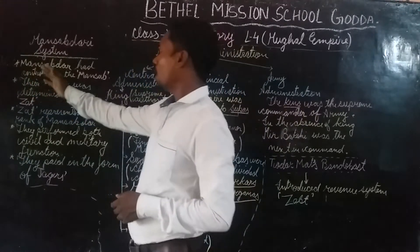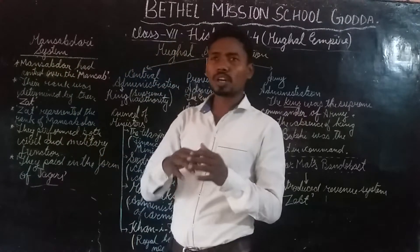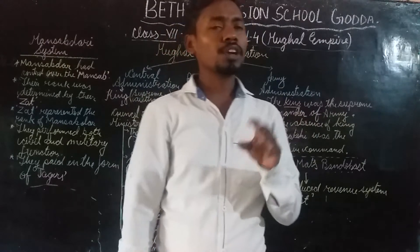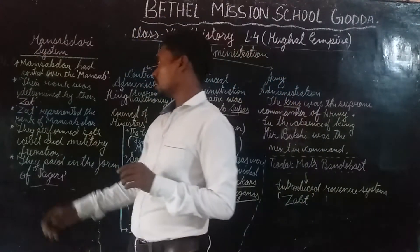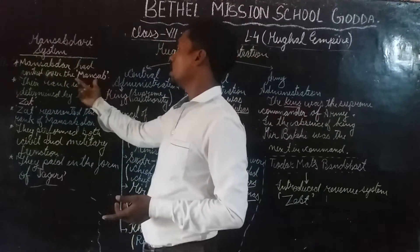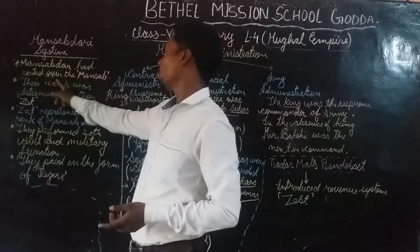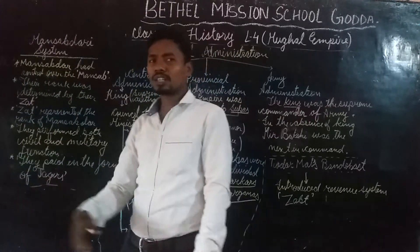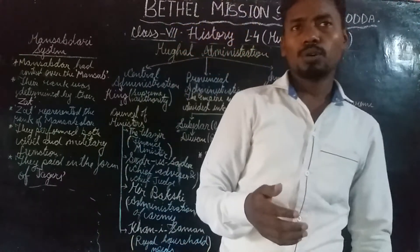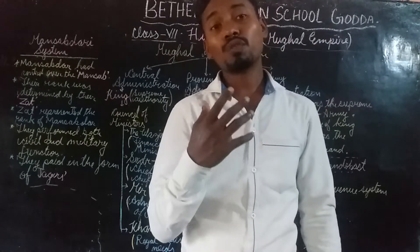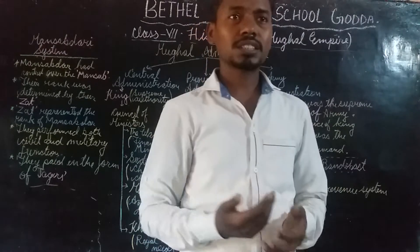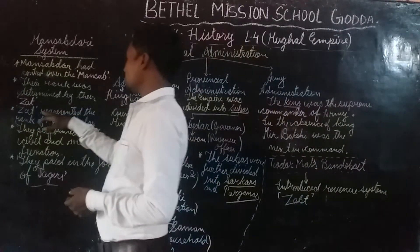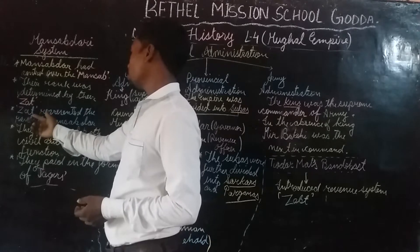Let's go to the Mansabdari system. What is the Mansabdari system? The whole of the empire was divided into revenue circles called Mansabs. This revenue circle was headed by the Mansabdar. The Mansabdar had control over the Mansab area, and the Mansabdar's rank was determined by the Zaat — a number given to different Mansabdars according to the amount of tax they brought to the empire. The more tax they brought, the higher rank they used to get.